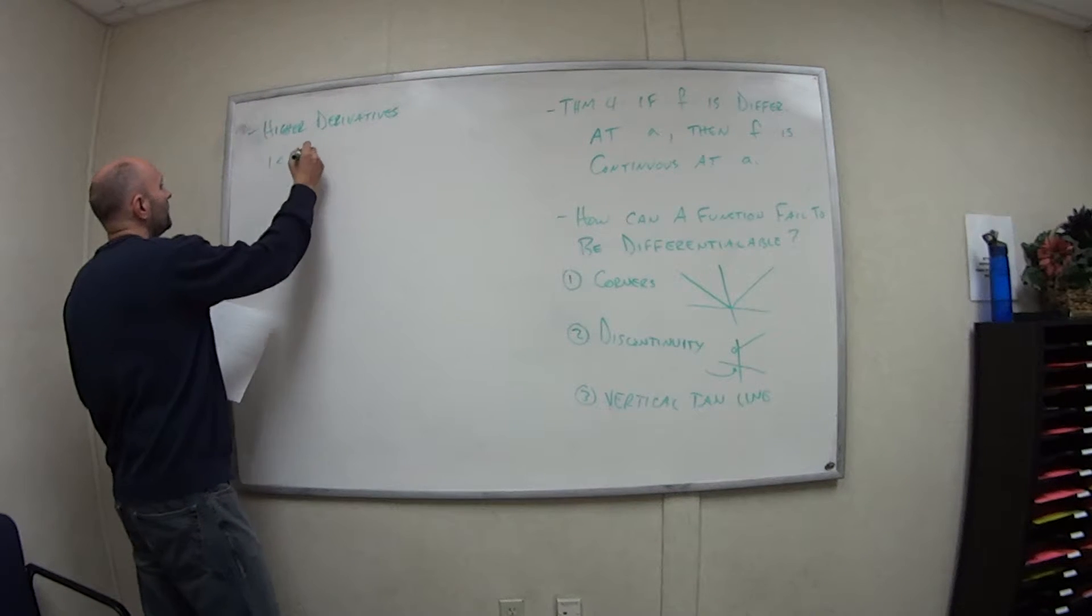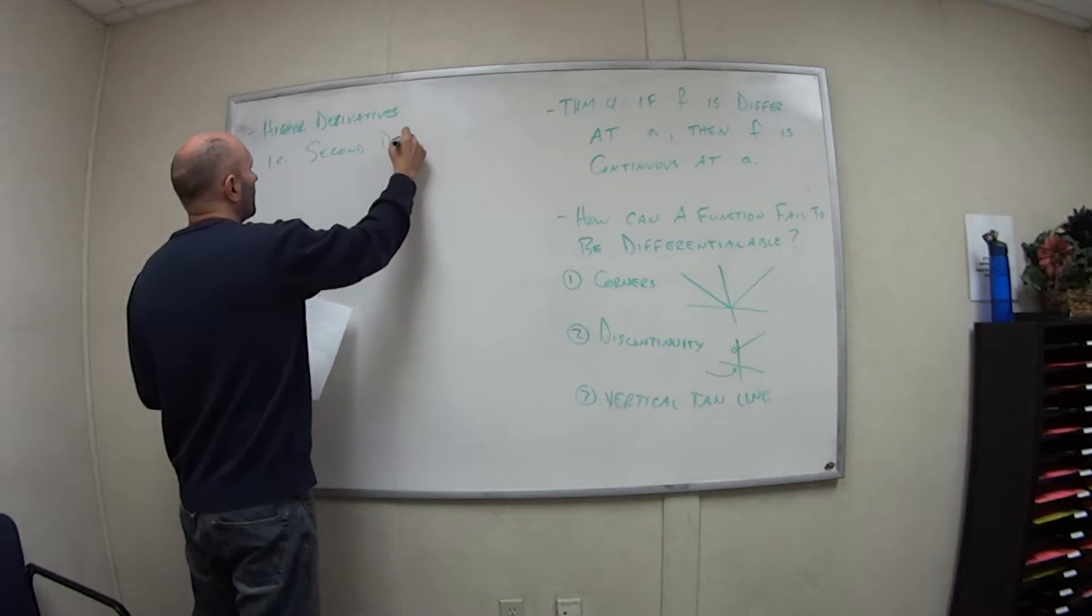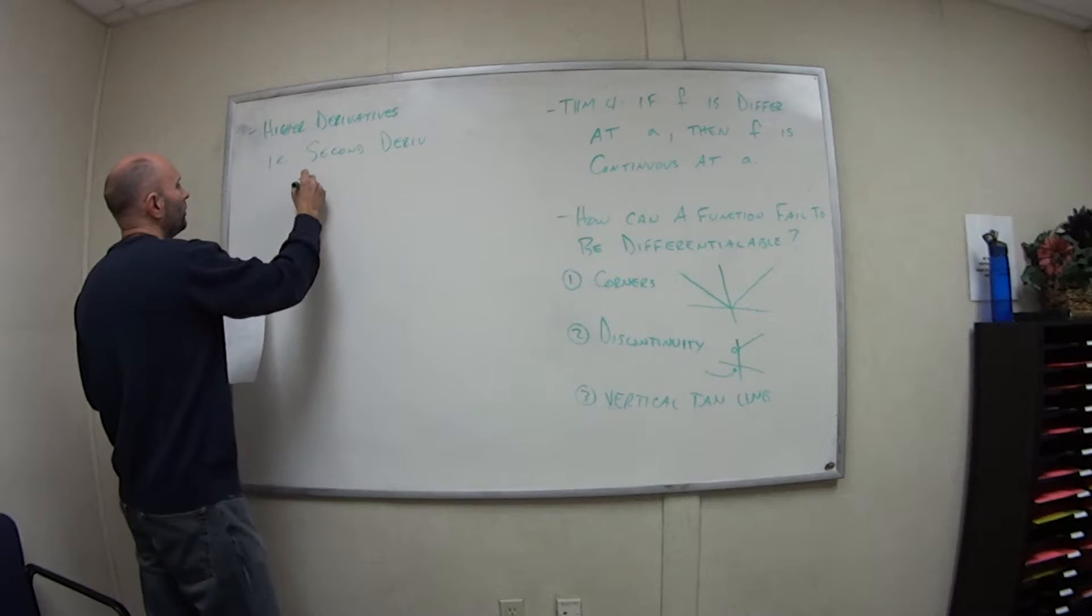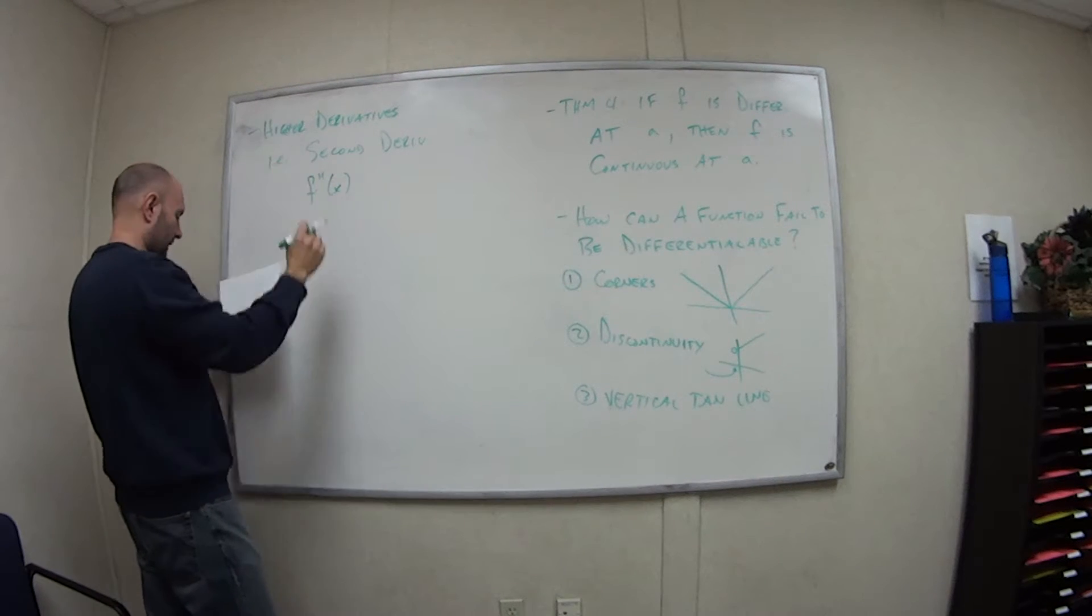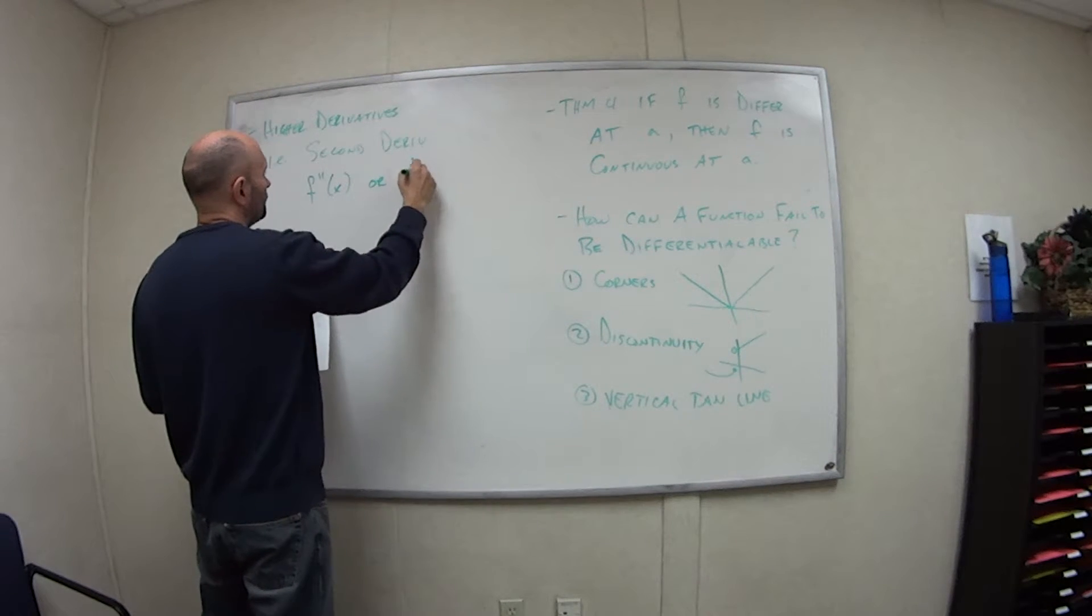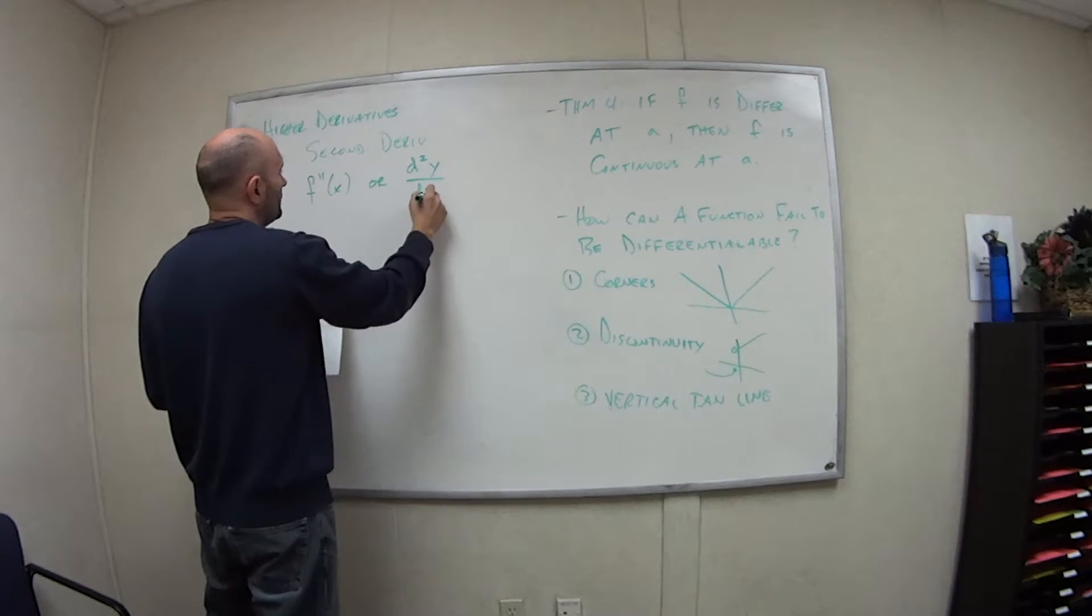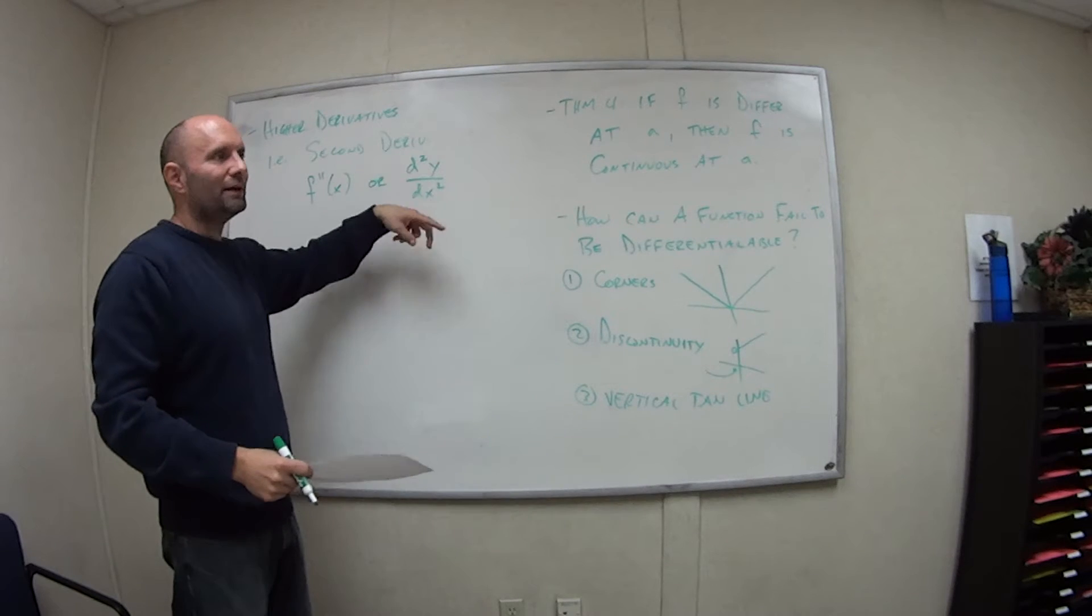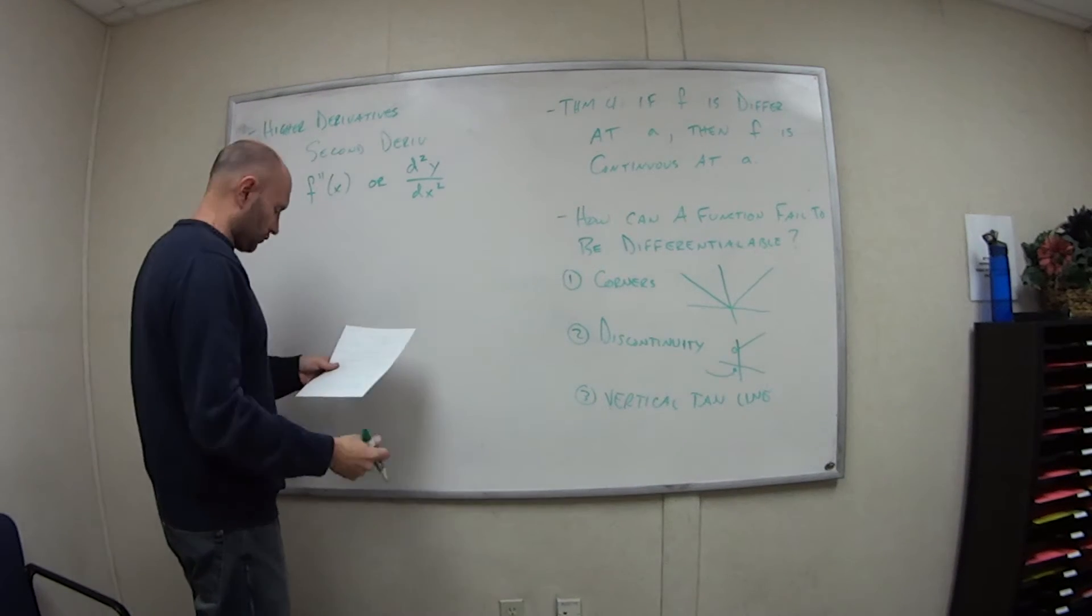So for example, if we have the second derivative, this would be notated as f double prime of x, so two little hash marks. Or it also has the special notation for the second derivative: we have d squared y over dx squared. If you see this notation, this also means it's the second derivative. And again, all we're going to do is repeat the process.